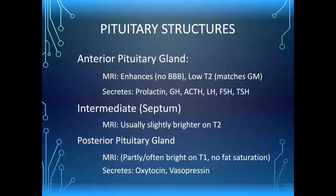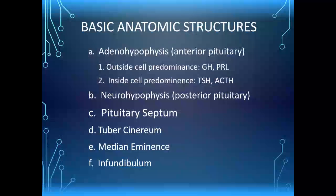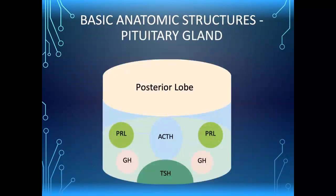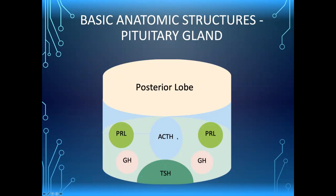The posterior pituitary secretes oxytocin and vasopressin. The anterior hypophysis has a structural arrangement where the outside cells are more typically growth hormone or prolactin, while the inside contains TSH and ACTH. The neural hypophysis is fairly uniform posteriorly. Going front to back and side to side, with the cavernous sinuses making a cylindric edge on the pituitary, the back is the posterior lobe and the anterior is much larger, with ACTH-secreting cells clumped in the middle, prolactin around the edges, growth hormone anteriorly, and thyroid stimulating hormone antero-centrally.